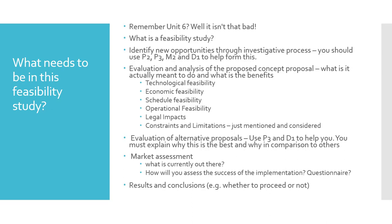You need to do a section on technological, economic, scheduling, operational, and legal feasibility, and then constraints and limitations. Once you've done those, you need an evaluation of alternative proposals — take your second choice and say how it would have failed feasibility and why. Then do a market assessment of what's currently out there: give three to five options you could use for your solution and which one you prefer and why. Also cover how you will assess the success of the implementation after it's completed, and give a recommendation before concluding everything written above.